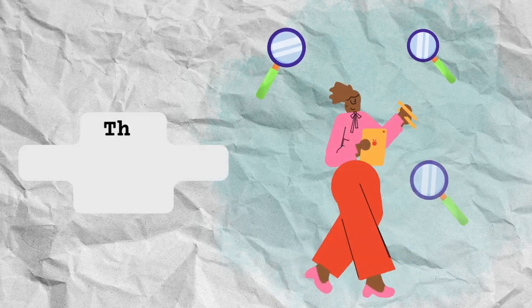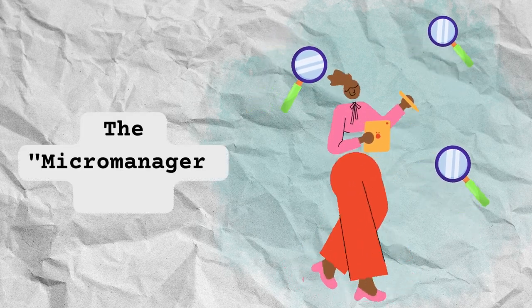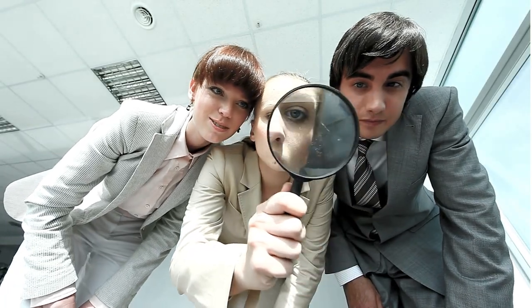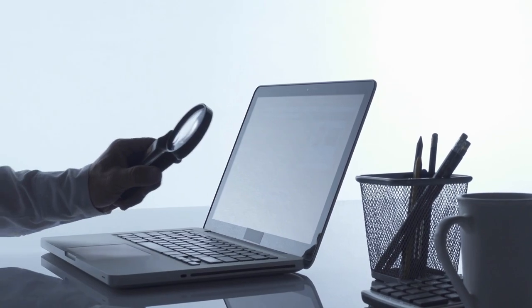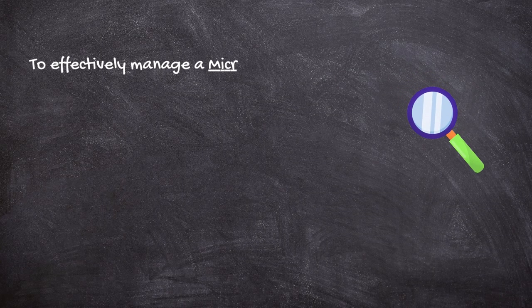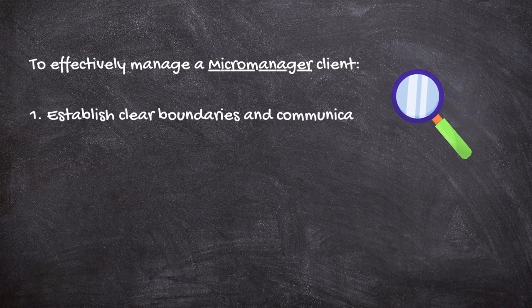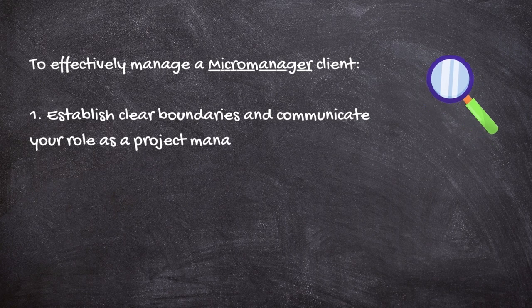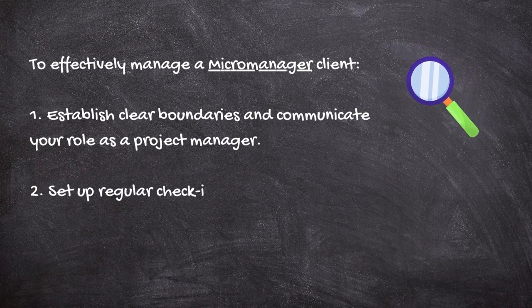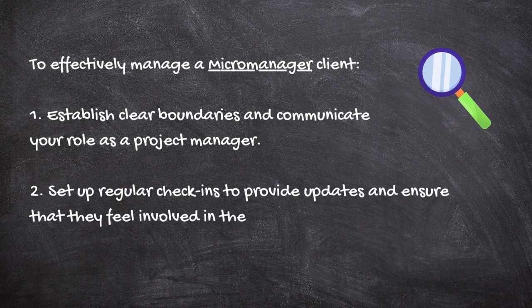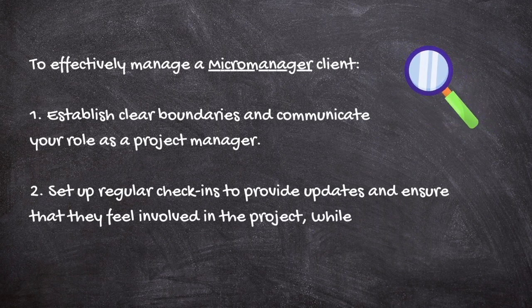The second type of client is the micro manager. These clients tend to want to be involved in every aspect of the project and may struggle with delegating tasks to your team. To effectively manage a micro manager client, it's important to establish clear boundaries and communicate your role as a project manager. You may want to set up regular check-ins to provide updates and ensure that they feel involved in the project, while also giving your team the space they need to work effectively.